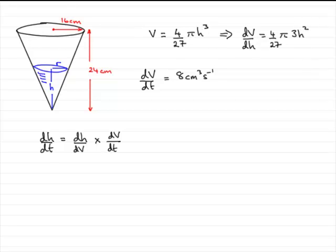And you can cancel this down. The 3 into 3 goes 1, 3 into 27 goes 9. So what you've got is essentially (4πh²)/9.